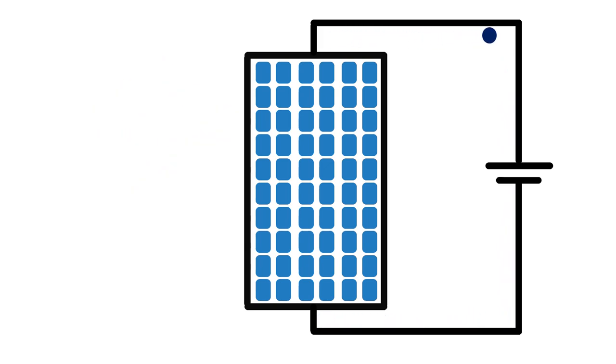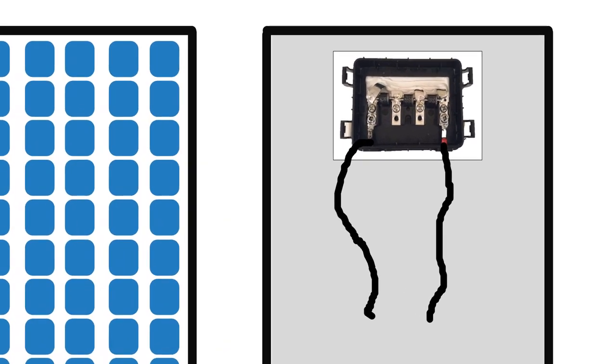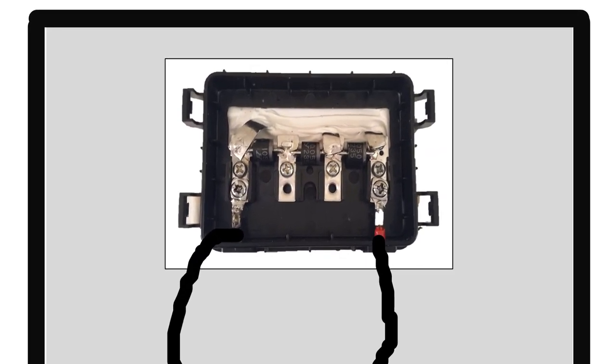Now I will tell you more about what bypass diodes are and why they are used. When we buy new solar panels, if we look at the back side, we can see built-in diodes connected across the positive and negative terminals of the panel. These diodes are called bypass diodes and are connected in reverse biased mode.